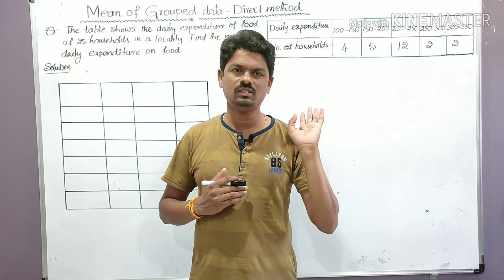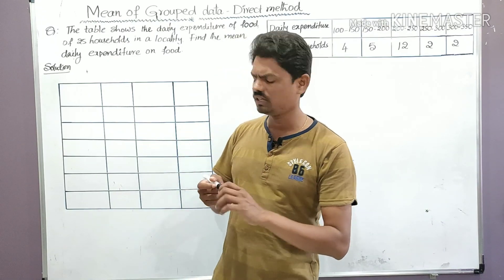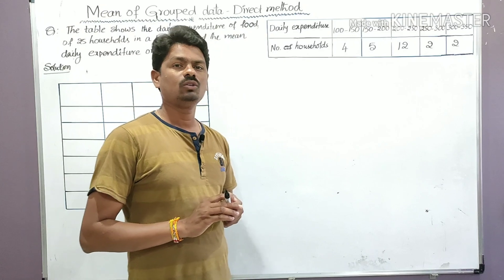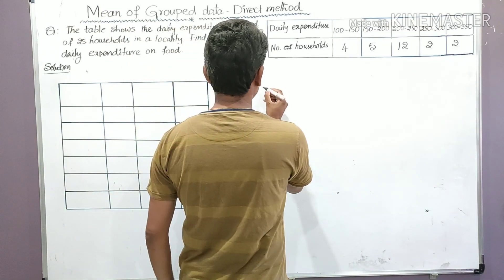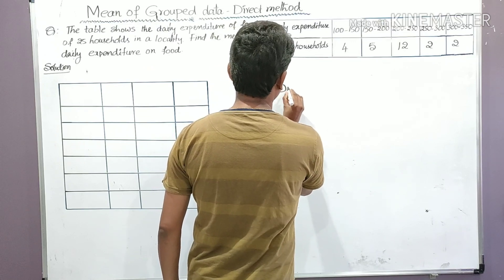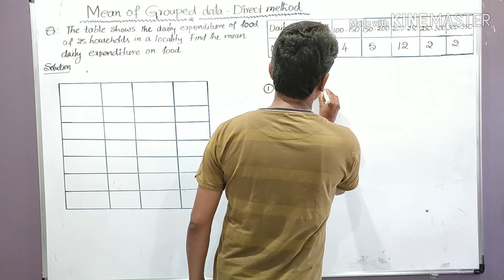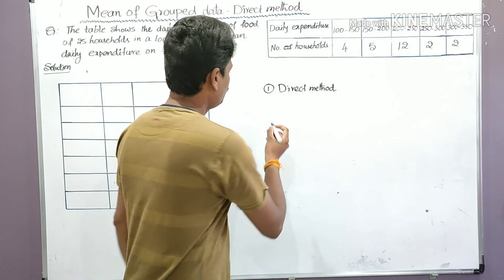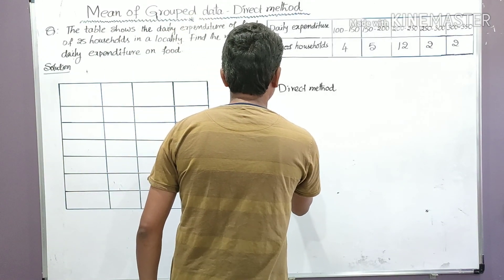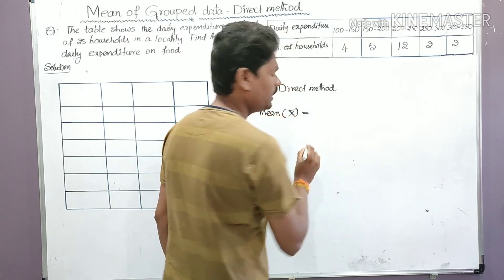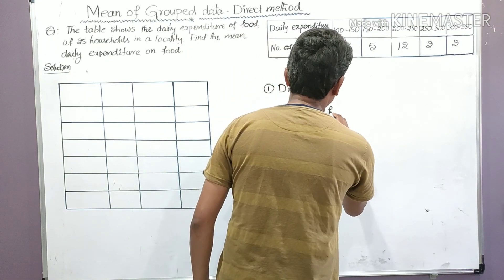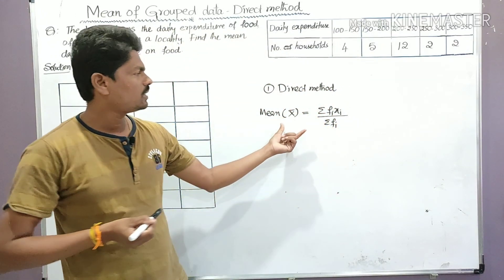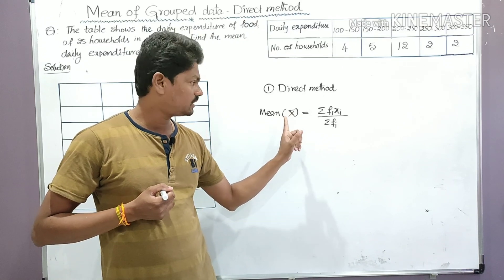This is a very important question worth four marks: 'Find the mean of the data using any one of the three methods.' Today we are going to find the mean using the direct method. The formula to find the mean of grouped data using the direct method is: mean x̄ = Σfᵢxᵢ ÷ Σfᵢ.